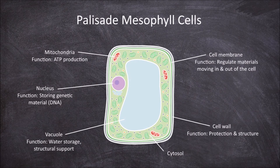The main feature of palisade mesophyll cells is they possess a large number of chloroplasts. The function of the chloroplasts is that they are the site of photosynthesis. This is why the palisade mesophyll has so many, as they are located at the top of the leaf and are the primary site of photosynthesis.